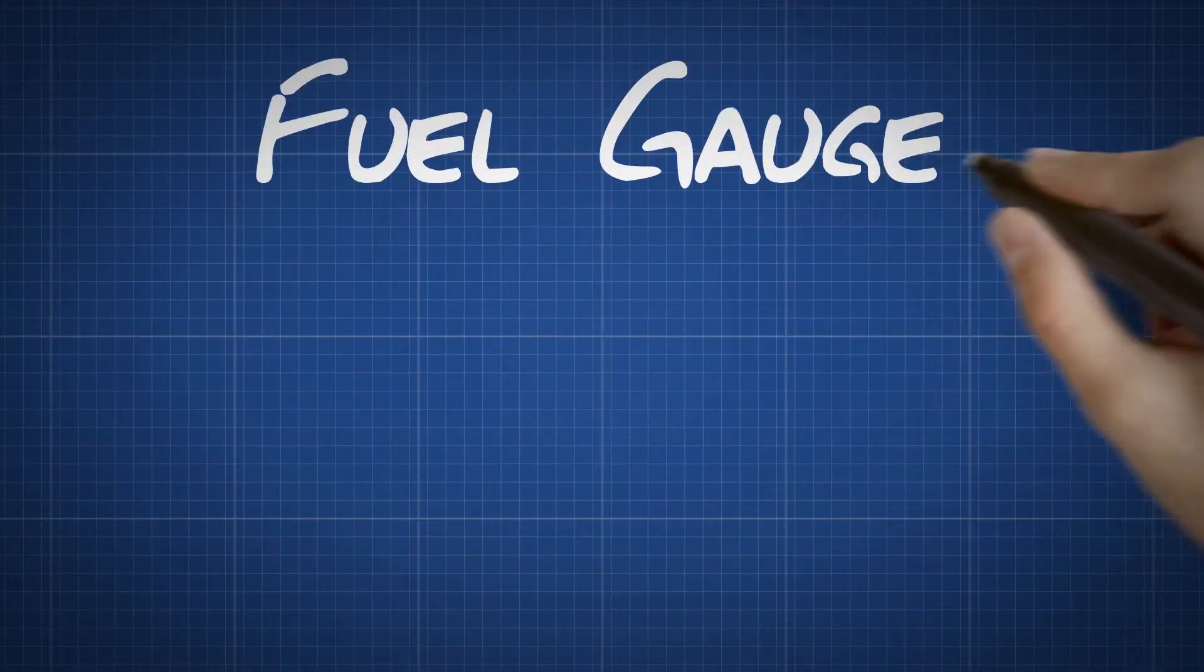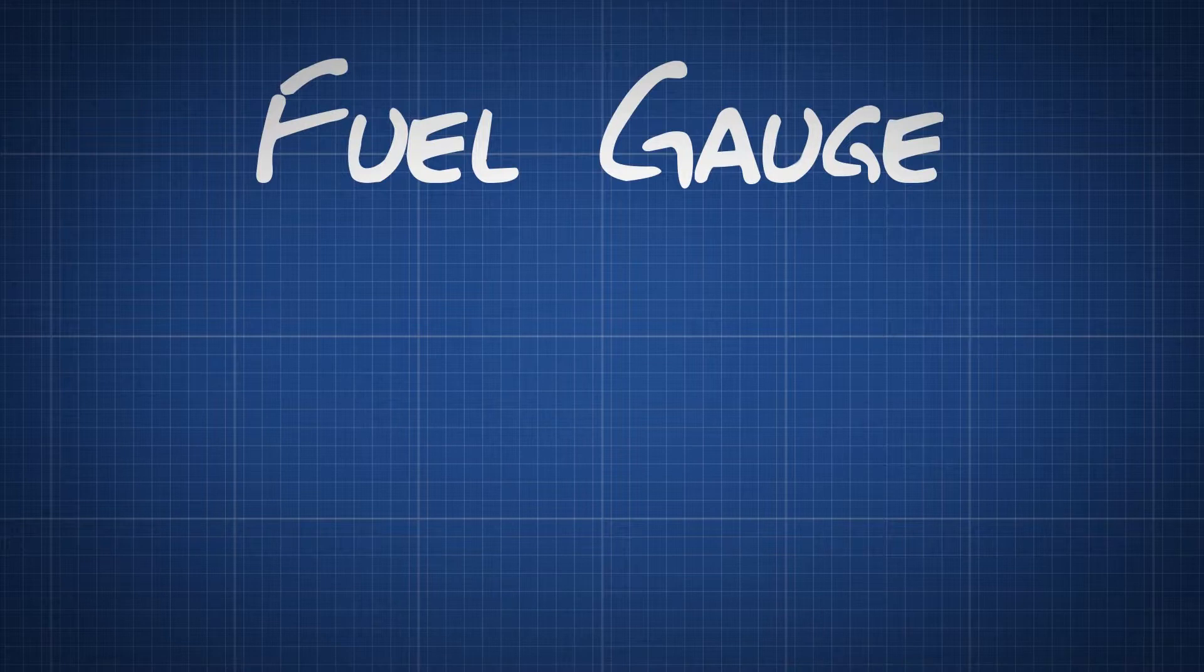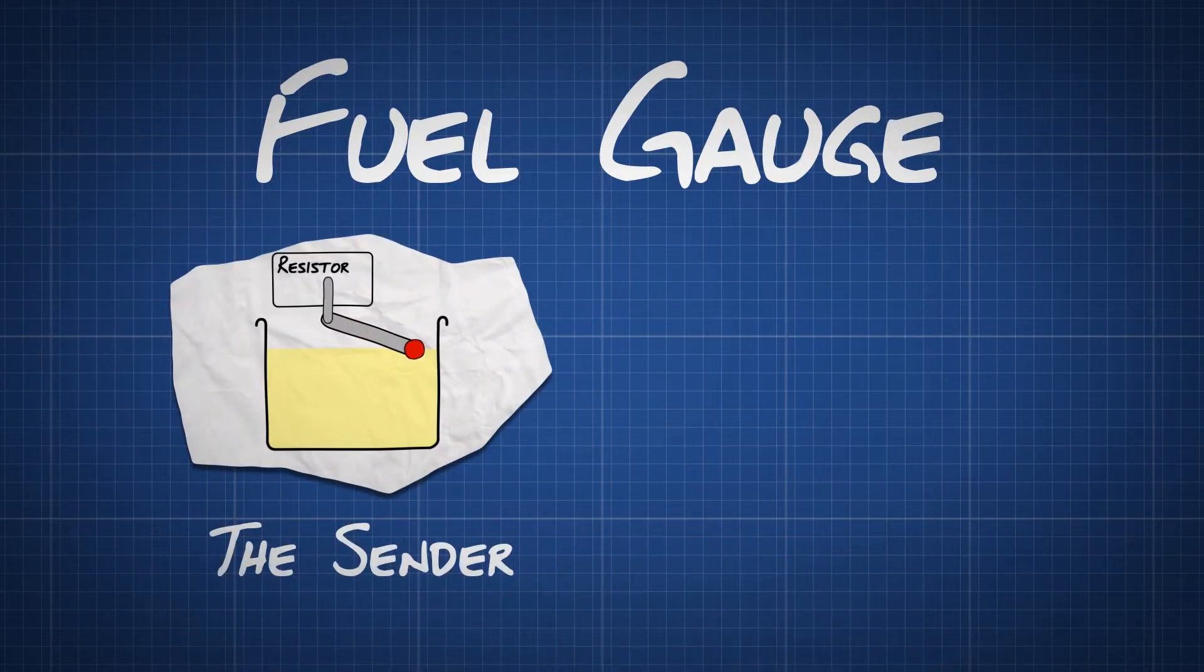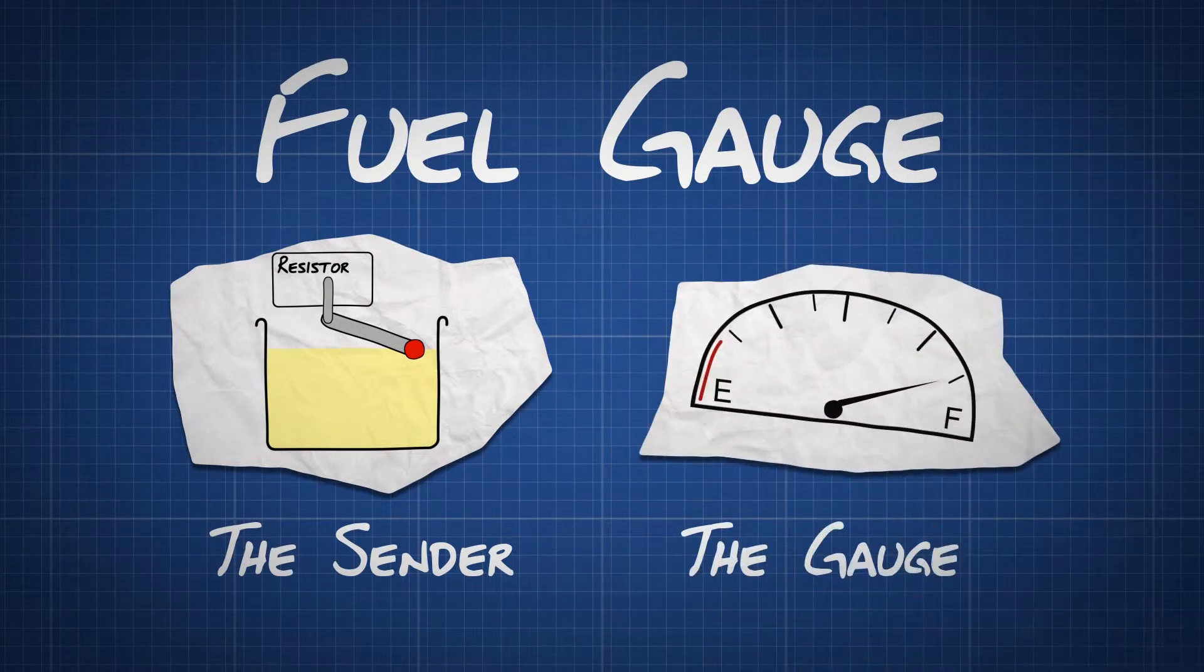How does a fuel gauge work? There are two main parts to a fuel gauge. The sender, which measures the level of fuel in the tank, and the gauge, which displays that level to the driver.